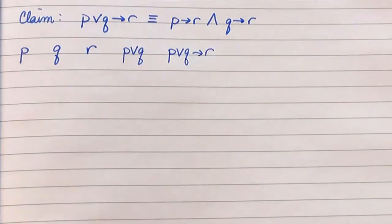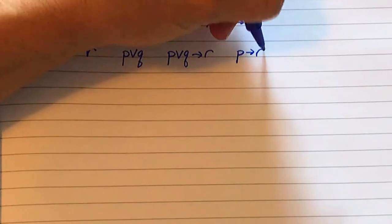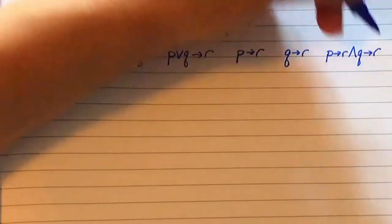For the right hand side, I am going to make three columns. We are going to have P implies R, Q implies R, and P implies R and Q implies R.